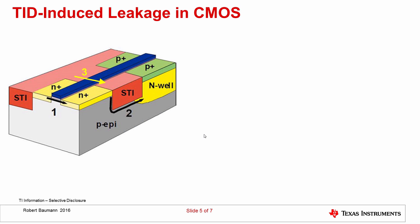In CMOS, the P-channel device gets harder to turn on and becomes less leaky with dose, whereas the N-channel becomes more and more leaky. Beyond mid-channel conduction between source and drain, there are two other leakage pathways. If the isolation becomes charged — the isolating layer between transistors being the shallow trench isolation — this large-volume oxide can capture a tremendous amount of charge, which under an electric field accumulates at edges of the channel. This creates a potential leakage path along the edge of the channel, as well as a leakage path under the isolation to the N-well.